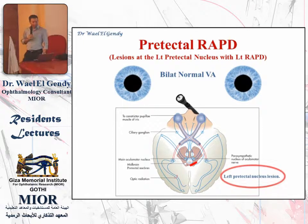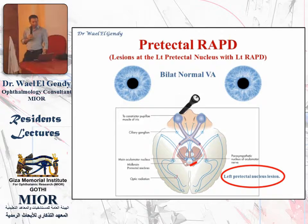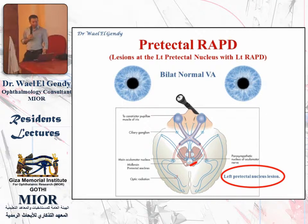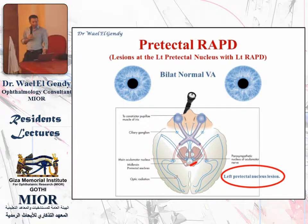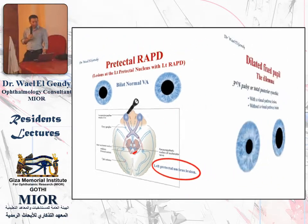The next example is what we call a pretectal relative afferent pupillary defect. We have a lesion in the pretectal nucleus in the posterior midbrain, which will affect the pupillary reflex but will not affect the vision, because it is away from the visual pathway. So you will get, in our example, a left relative afferent pupillary defect, but the vision will be normal. The flash on the right side gives normal constriction of both eyes; the flash on the left side gives dilatation of both eyes.